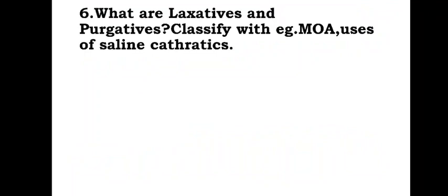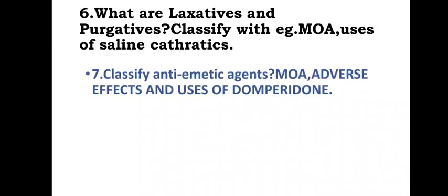Classify anti-emetic agents and emetic agents, their mechanism of action, adverse effects, and uses of domperidone. Sometimes they will ask about ondansetron or prochlorperazine — these are all anti-emetic drugs that prevent vomiting sensation.